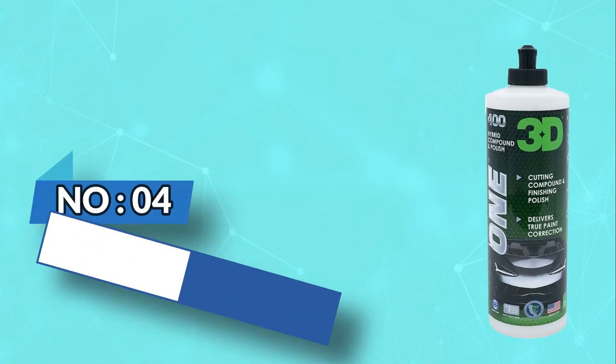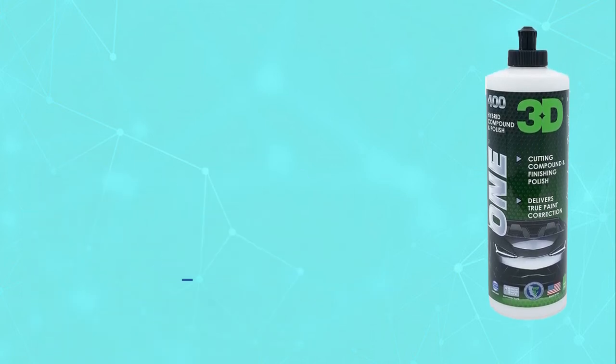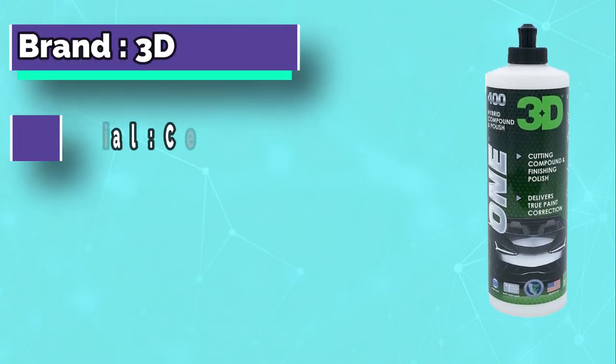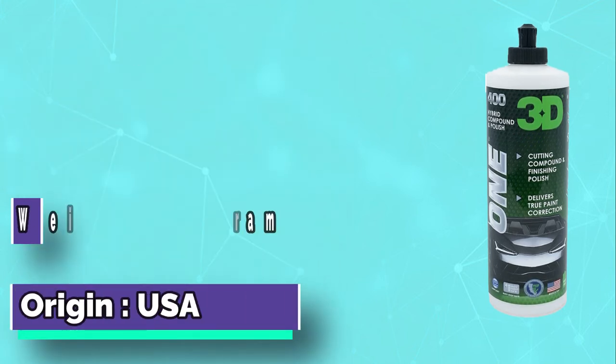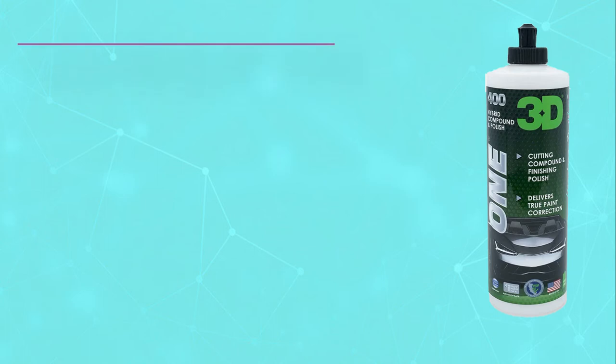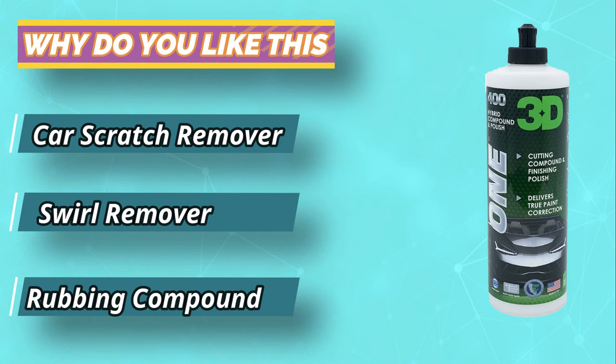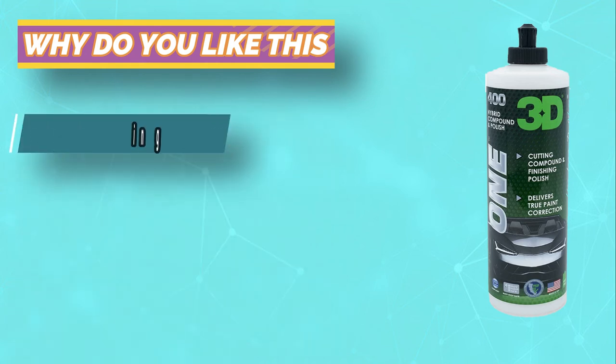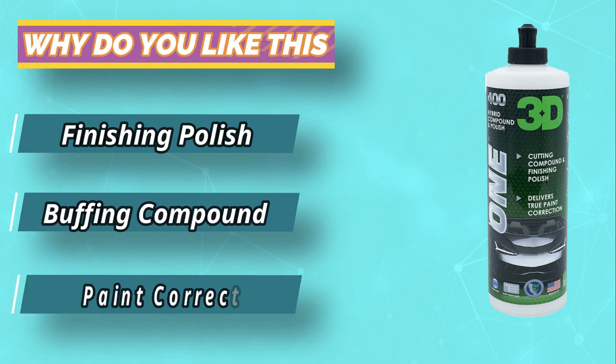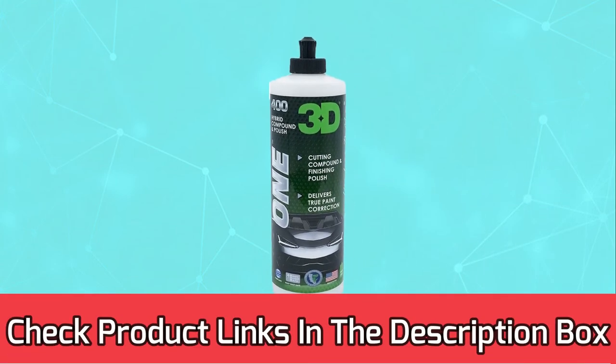Number 4: 3D Paint Correction Compound. 3D1 is a hybrid high-grade rubbing compound and finishing polish all-in-one bottle. 3D1 is a one-step scratch and swirl remover with sealant protection that will deliver a true paint correction and bring your paint job back to life. Our premium professional-grade formula removes many moderate to heavy surface imperfections on all paint colors.